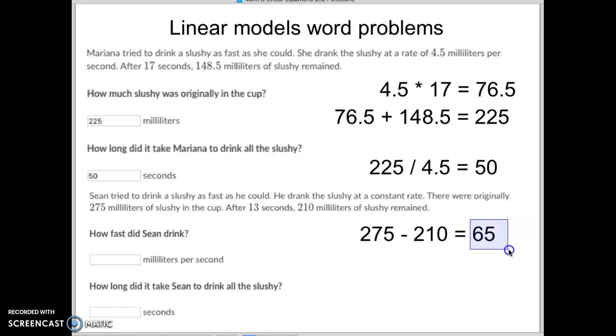Since we know he was able to drink 65 milliliters in 13 seconds, we can then divide those two. Take the 65 divided by 13 and we know that he is drinking 5 milliliters per second right here.